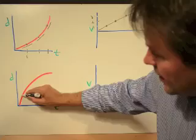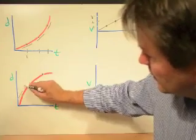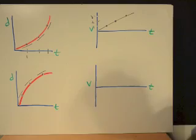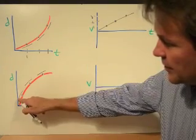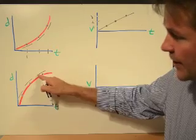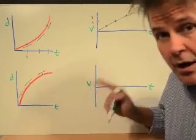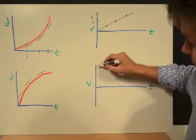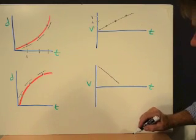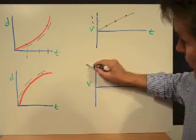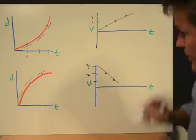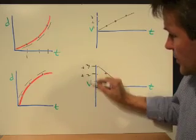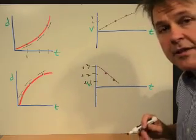Now draw our little dots and tangent lines. What's happening to the slope? The slope seems to be decreasing, but we have a positive slope. Positive slope means positive velocity. Slope is decreasing, so that means the speed is decreasing. The values go from positive three down to positive two, positive one — speed is decreasing in the positive direction.